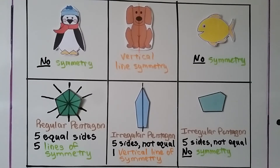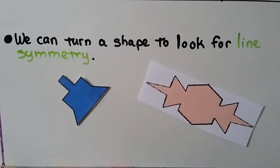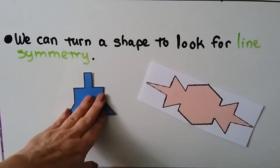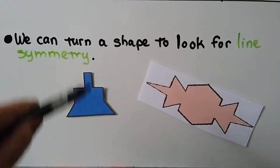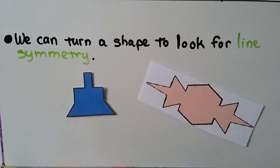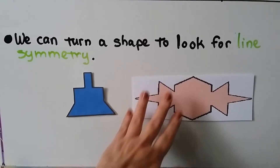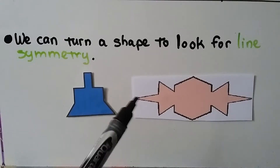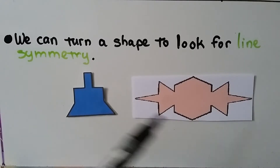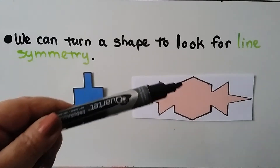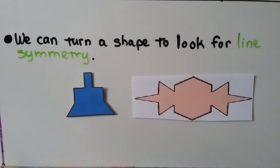If we have a figure in our book or on a paper — homework or test — and we can't quite tell if it has line symmetry, we can turn the book or paper. If we turn this shape, we can imagine drawing a vertical line and folding it, so it does have symmetry. For another shape, we could straighten it out and draw a vertical line, fold it and it would match, or draw a horizontal line and fold it across — and it would match. Try turning your book or paper to help you look for line symmetry.